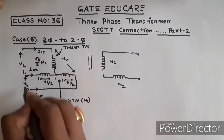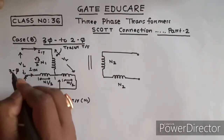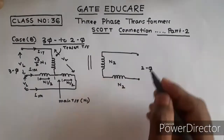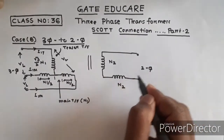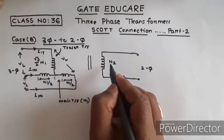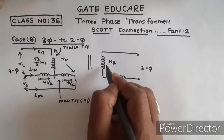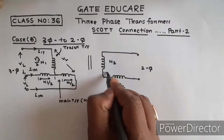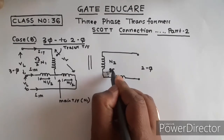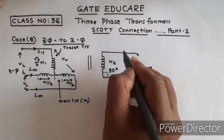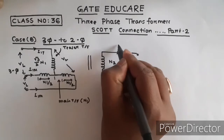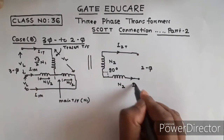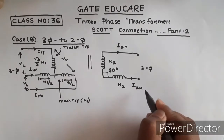For a three-phase to two-phase conversion to produce a balanced two-phase output, the number of turns of the secondary of the main transformer and the teaser transformer must be the same. The phase displacement between the two secondary outputs should be 90 degrees. The teaser secondary current is I2T and the main transformer secondary current is I2M.